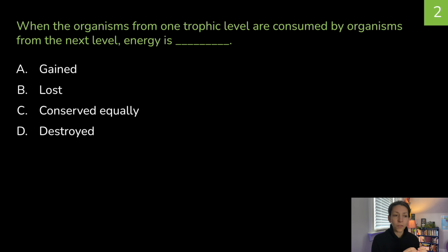When the organisms from one trophic level are consumed by organisms from the next trophic level, energy is a gained, b lost, c conserved equally, or d destroyed. Think about it. Correct answer is b lost. Remember every time you go up a trophic level a significant amount of energy is lost. It's more efficient to consume at lower levels of an energy pyramid.